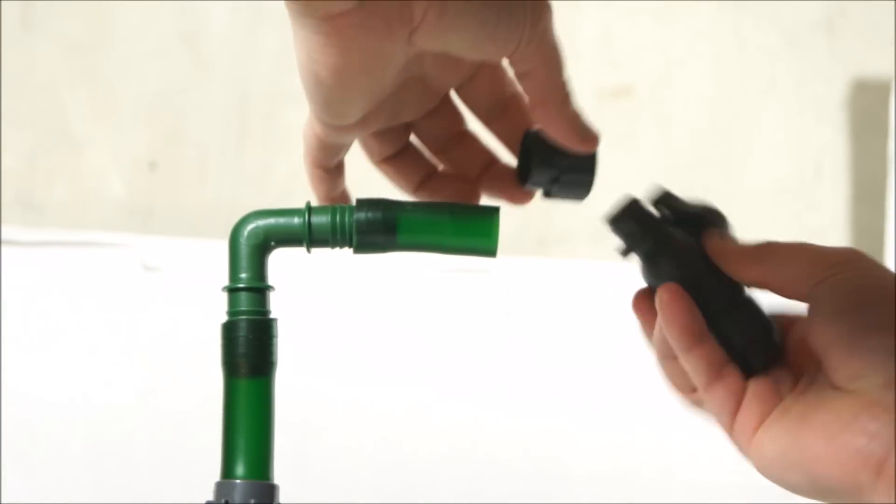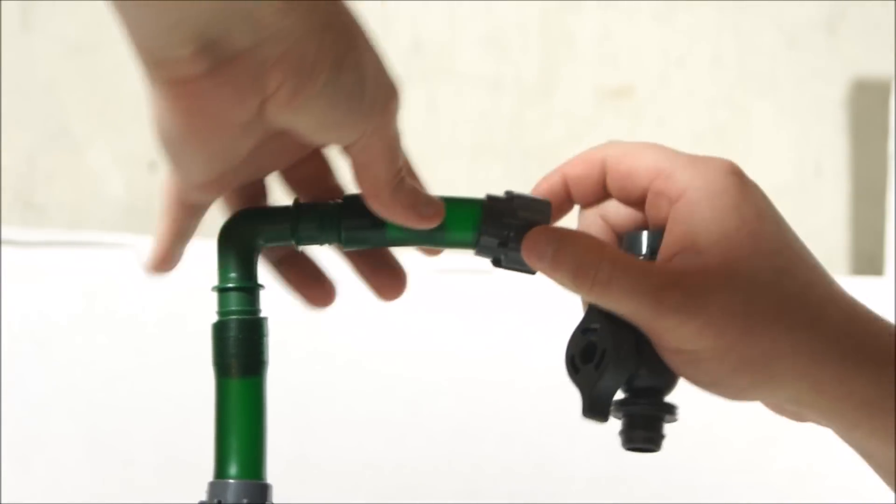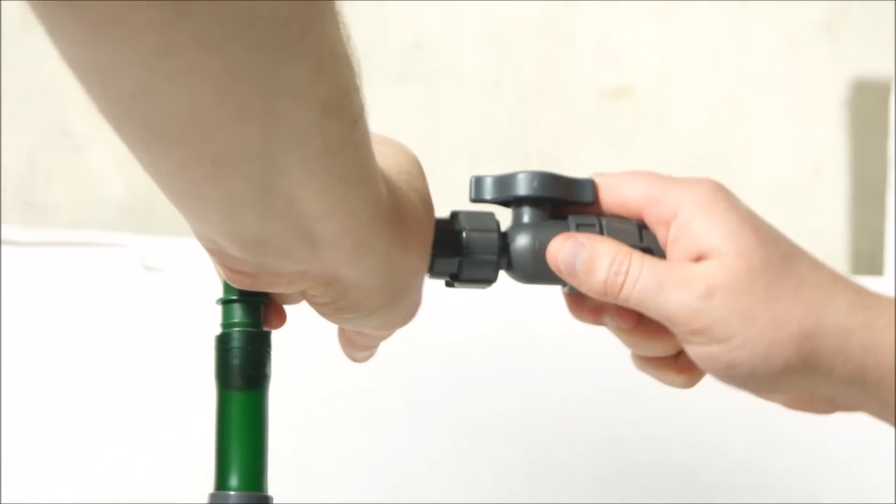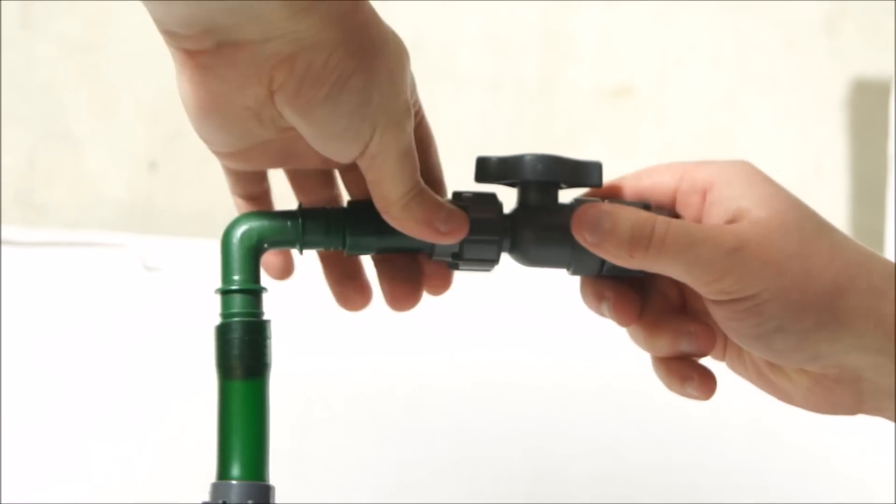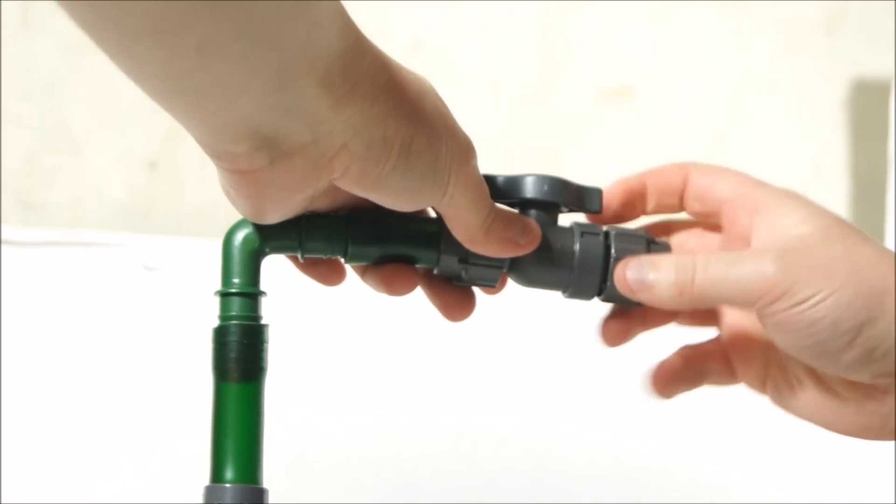You will want to take off the lock nut and put it on the tubing. After this you place the valve on the tubing and then tighten the lock nut. You will want to do the same thing for the other side.